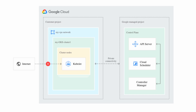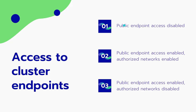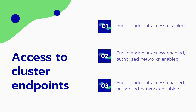In a private cluster there are three ways of securing access to the endpoint. The first is public endpoint access disabled — this completely tightens the private cluster so there is no public internet access. This is used in enterprise companies that have a direct connection between their data center and the Google Cloud network, using VPN or direct connectivity.